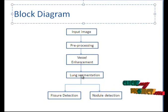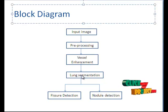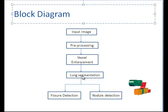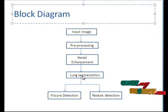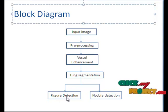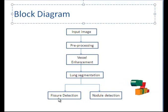The vessel-enhanced image passes to lung segmentation, where we segment the lung from the CT image. First, we choose a seed point in the image, and from that point we find similarity pixels in the CT image. Finally, the similar pixels are segmented. The segmented lung then passes to two stages: the first is fissure detection and the second is nodule detection.